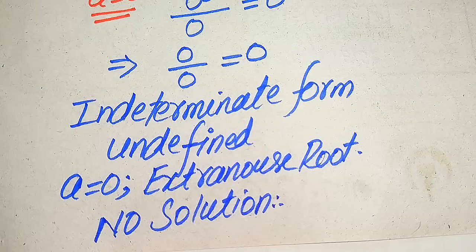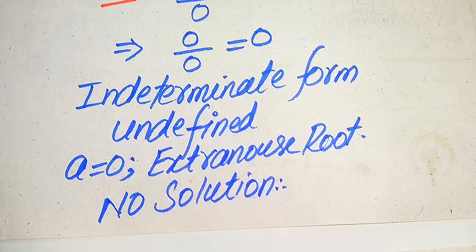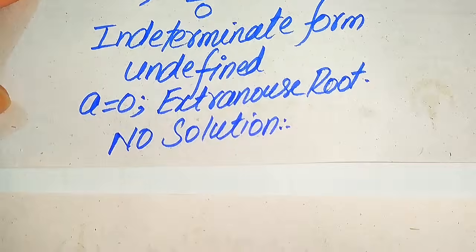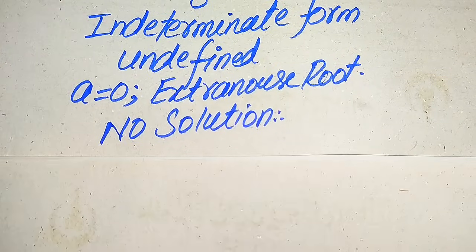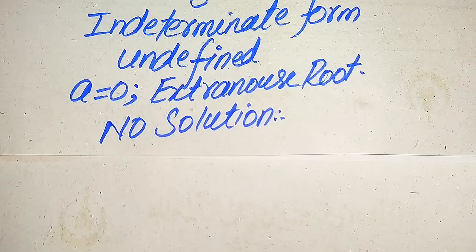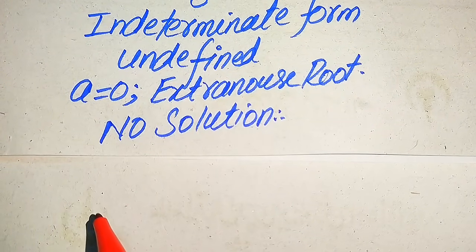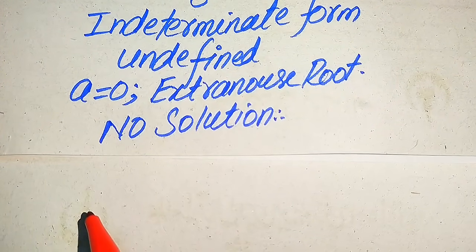I will now explain the difference between the two terms. The root which satisfies the given question statement is called the solution of the given equation. The root which does not satisfy the given question statement is called the extraneous root. In this question, a equals 0 is the extraneous root, and that is our final answer in the first method.